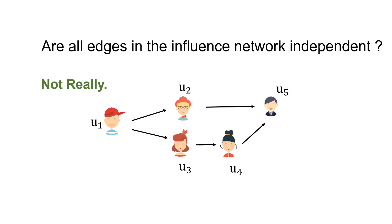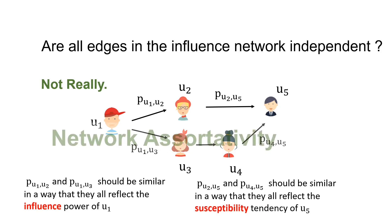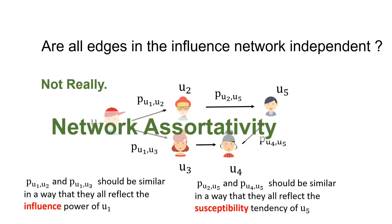For example, in this sub-network, the activation probability between U1-U2 and that between U1-U3 should be similar in some way because they all reflect the influence power of U1. Similarly, the activation probability between U3-U5 and that between U4-U5 should be similar in some way because they all reflect the susceptibility of U5. This simple example indicates the existence of network assortativity in the influence network, which is largely ignored in most of the online influence maximization literature.